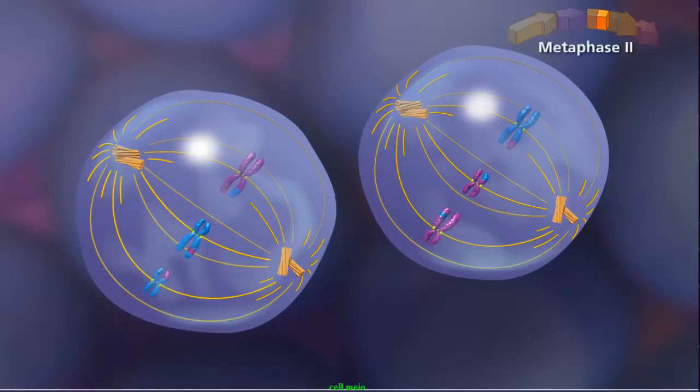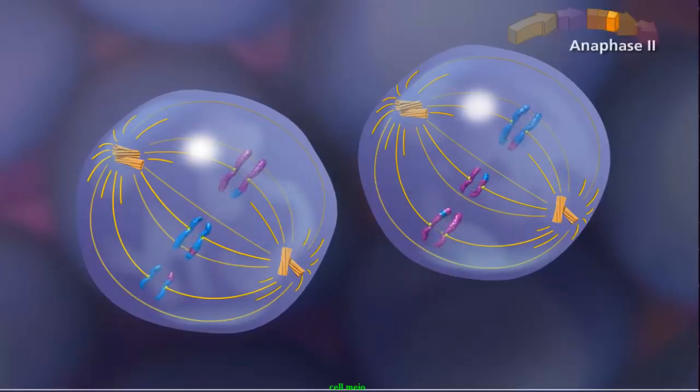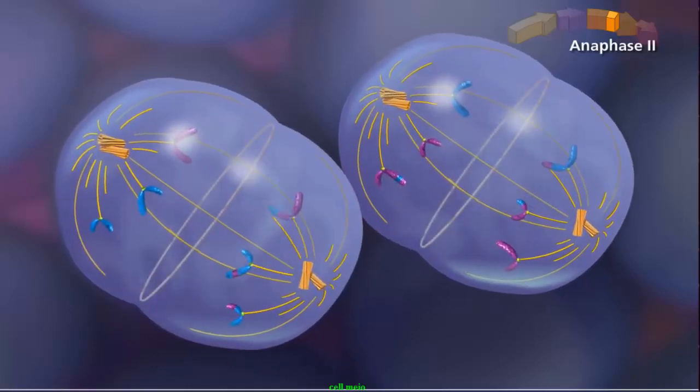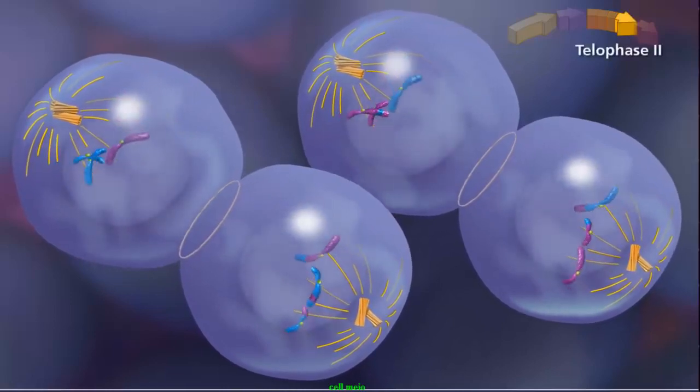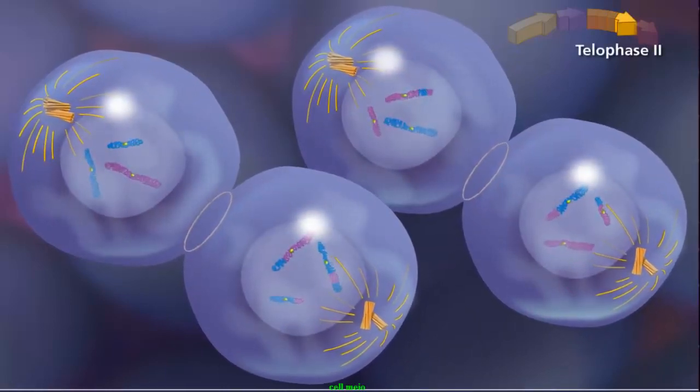The spindle aligns the sister chromatids along the metaphase plate during metaphase II. During anaphase II, sister chromatids separate and individual chromosomes move toward the poles.